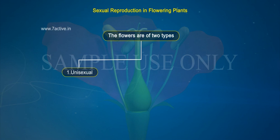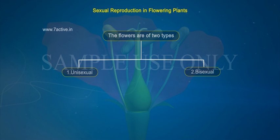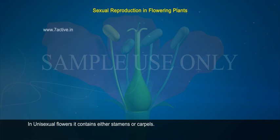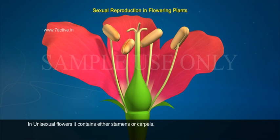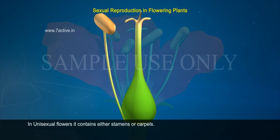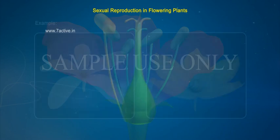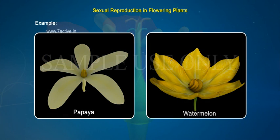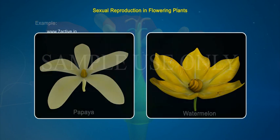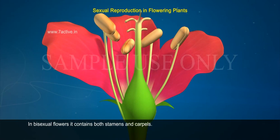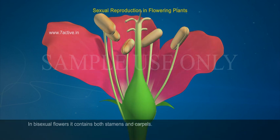1. Unisexual and 2. Bisexual. In unisexual flowers, it contains either stamens or carpels. Examples are papaya and watermelon. In bisexual flowers, it contains both stamens and carpels.